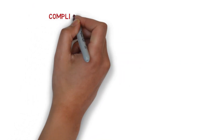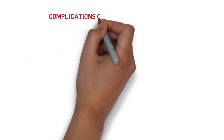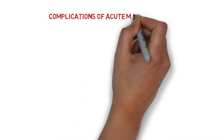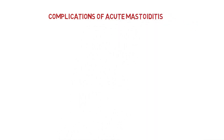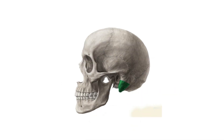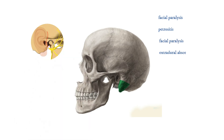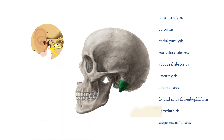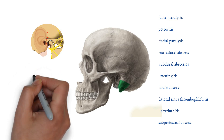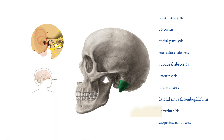What are the complications of acute mastoiditis? Complications generally occur in structures attached to the mastoid bone. These include facial paralysis, petrositis, extradural or subdural abscesses, meningitis, vein abscesses, lateral sinus thrombophlebitis, and sub-periosteal abscesses.